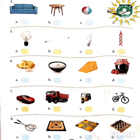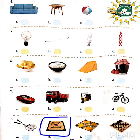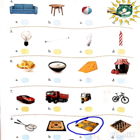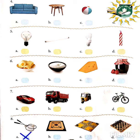Number eight: you have badminton, carom board, ludo, and chess. Among these, badminton is an outdoor sport, whereas carom board, ludo, and chess you can play at home. So badminton is the odd one out.